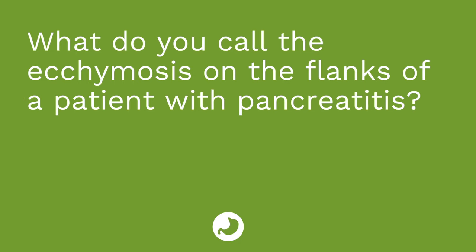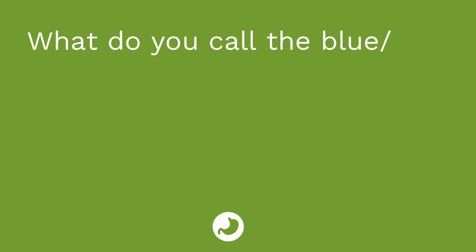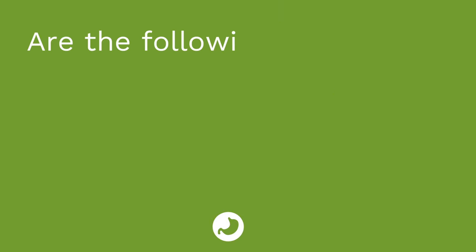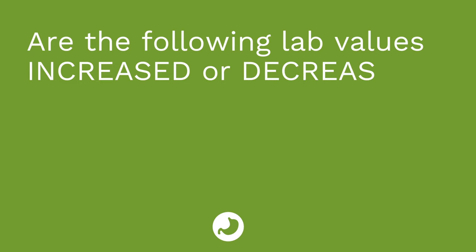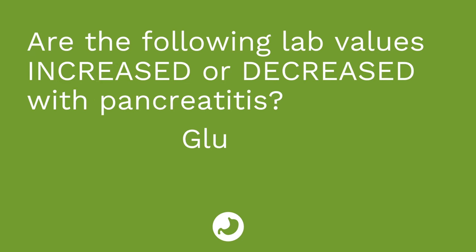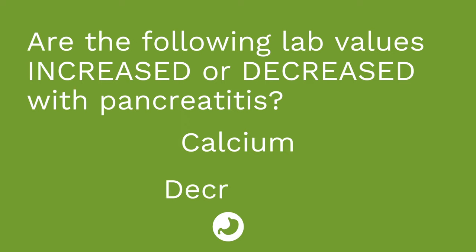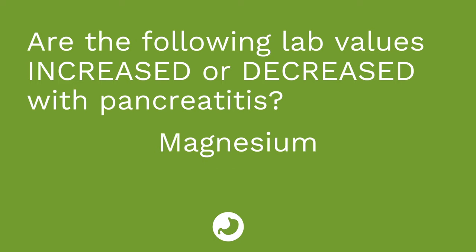Are you ready for your quiz? Three questions. First: what do you call the ecchymosis on the flanks of a patient with pancreatitis? The answer is Turner sign. Question two: what do you call the blue-gray discoloration around the umbilicus with pancreatitis? The answer is Cullen sign. For the third question, tell me whether each lab value will be increased or decreased with pancreatitis: Glucose — increased. Amylase — increased. Calcium — decreased. Lipase — increased. Magnesium — decreased.